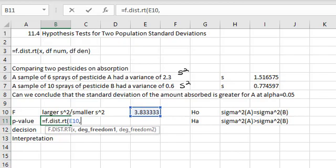the degrees of freedom of group one, the larger group, the numerator is pesticide A has the larger variance, one less than six is five, comma, the smaller variance of 0.6 came from group B, which has nine degrees of freedom, one less than the sample size of 10.